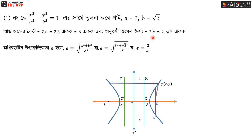As we have seen, there is the eccentricity formula: c equals root of a² plus b², divided by a. This gives us the eccentricity value.